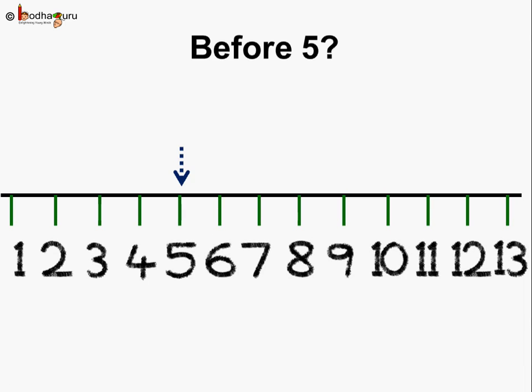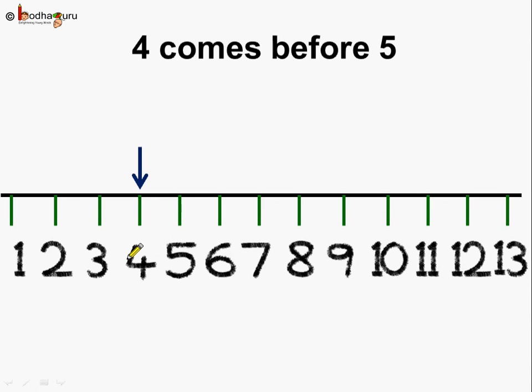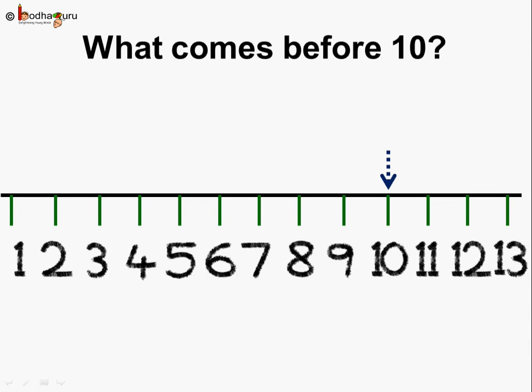Now, we will find what comes before a number. Say, this is number 5. What comes before 5? We will look at the number which comes just ahead of 5 or towards the left of 5. And, what do we find? This is number 4. So, number 4 comes before 5. Understood?